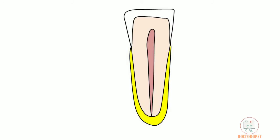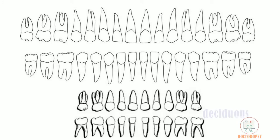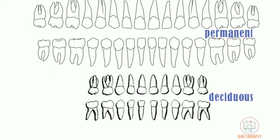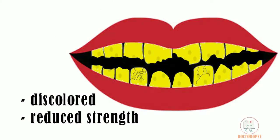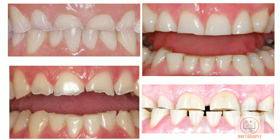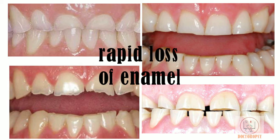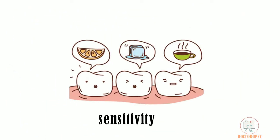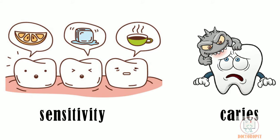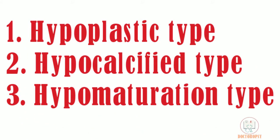Amelogenesis imperfecta affects the enamel of all teeth in almost equal manner in both deciduous and permanent dentition. The teeth are discolored and have reduced strength. Due to the reduced strength, the teeth show rapid loss of enamel, leading to sensitivity and increased caries.